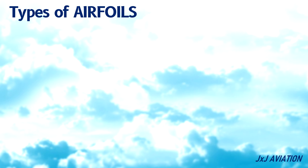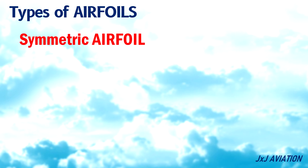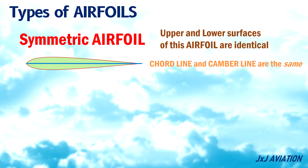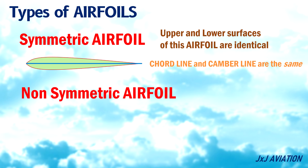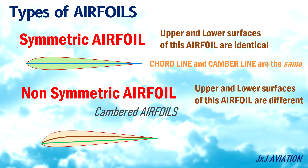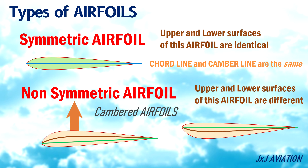Types of airfoils. Symmetric airfoil: the upper and lower surfaces of this airfoil are identical; the cord line and camber line are the same. Non-symmetric airfoil: the upper and lower surfaces are different; the cord line and camber line are different. They are also called cambered airfoils. If the camber line is above the cord line, the lift is generated upward. If the camber line is below the cord line, the lift is generated downward.